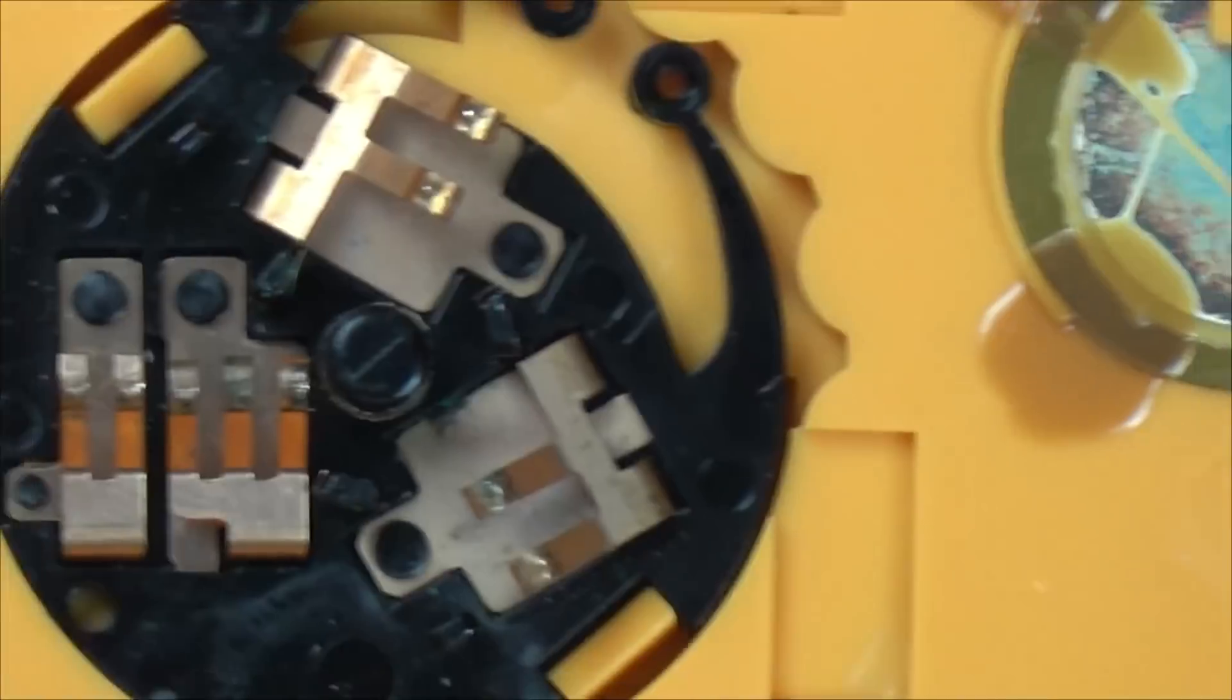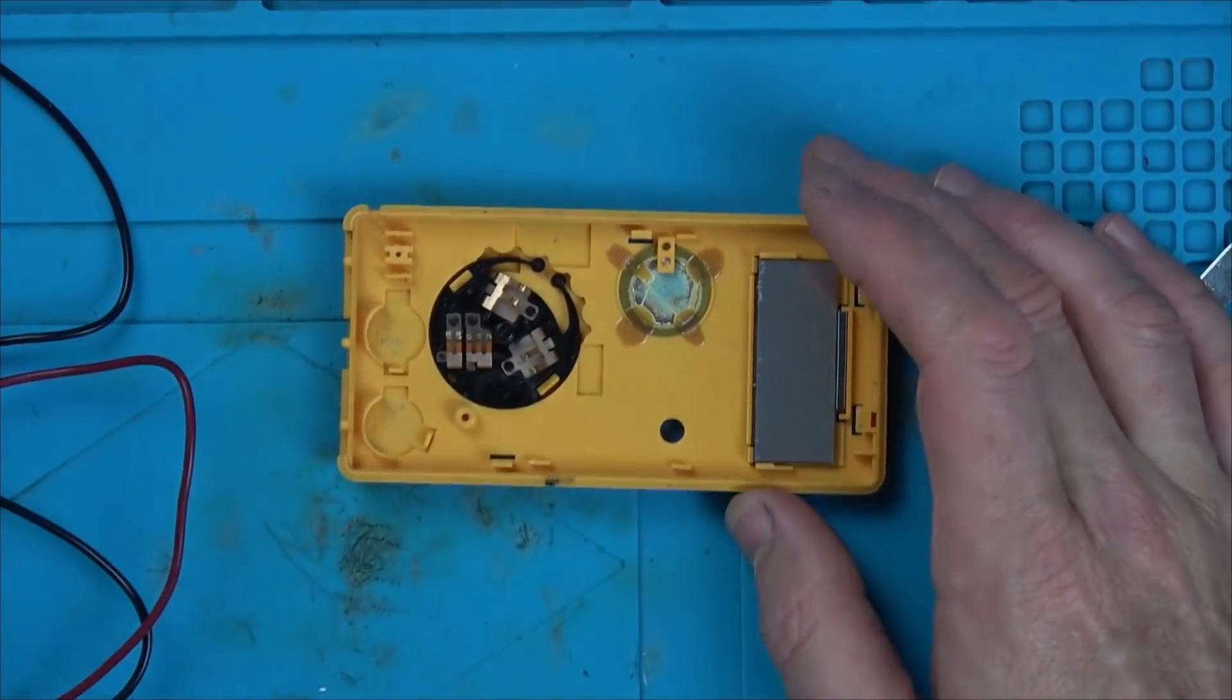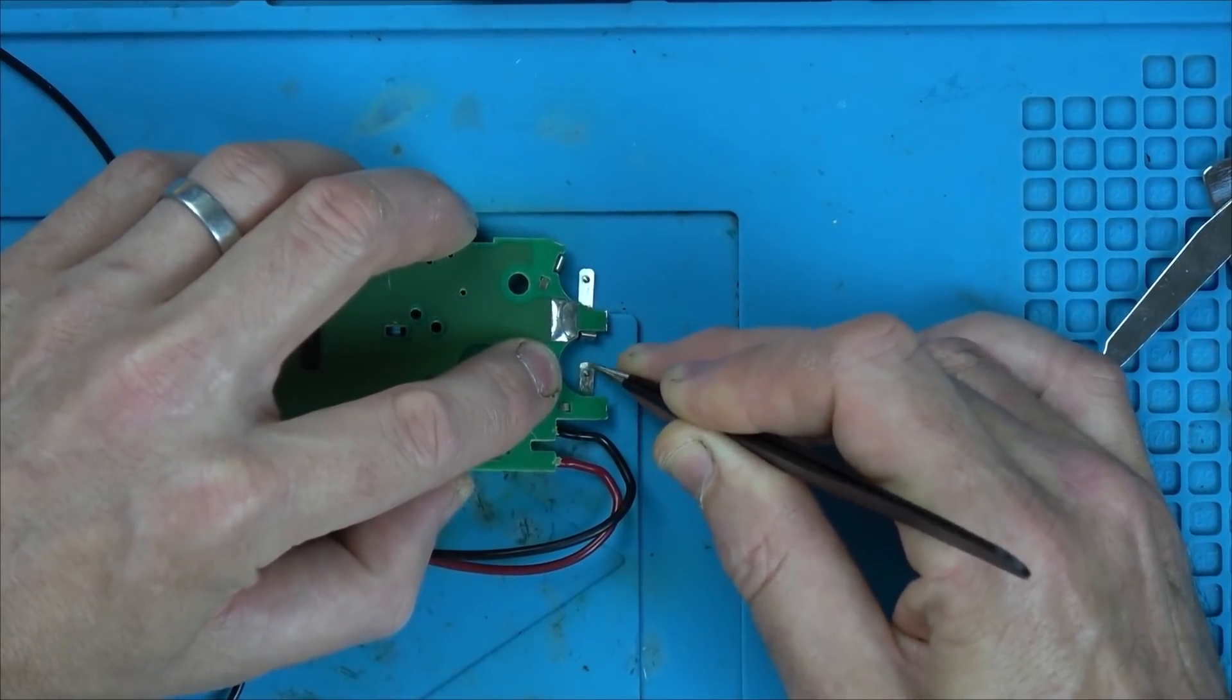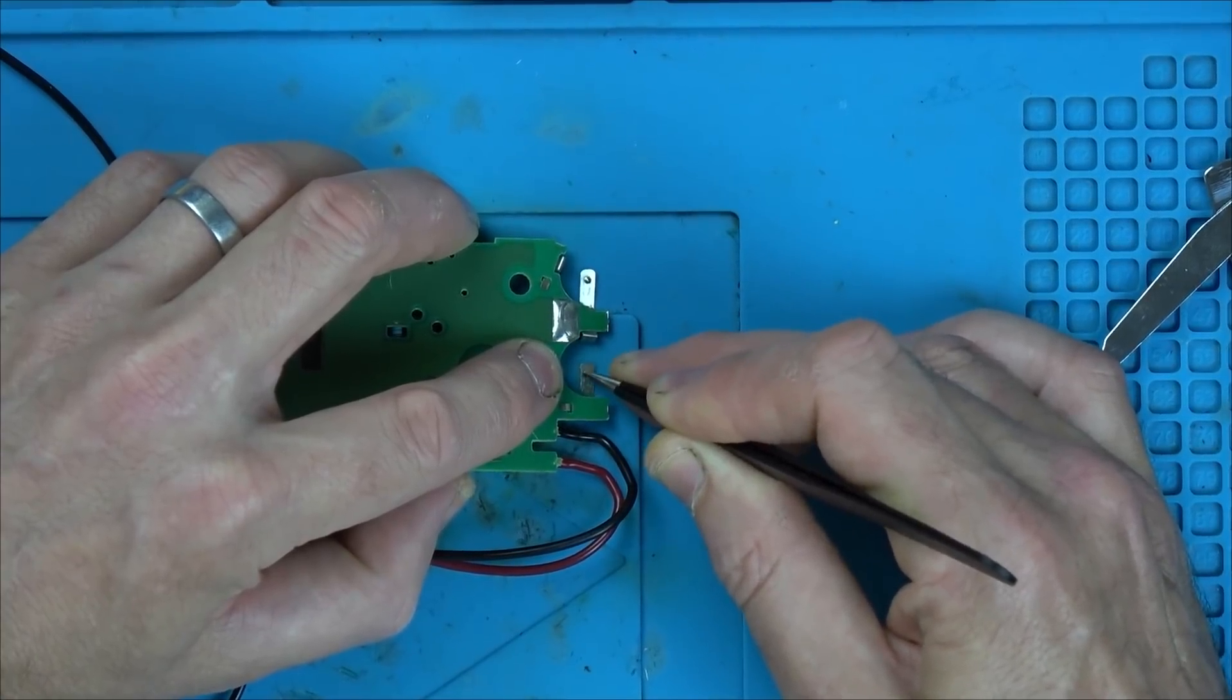You can see a bit of blue here as well. They look cleaner than they were. Let's pop it back together and see if that fixed it. Actually while I've got this apart let me use a little bit of white vinegar on here just to neutralize the alkaline batteries.